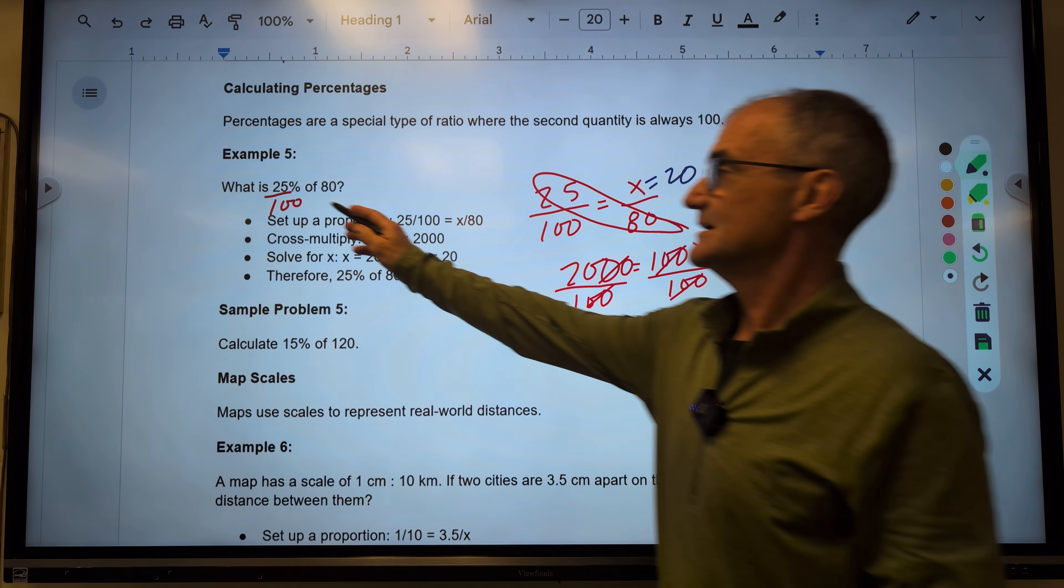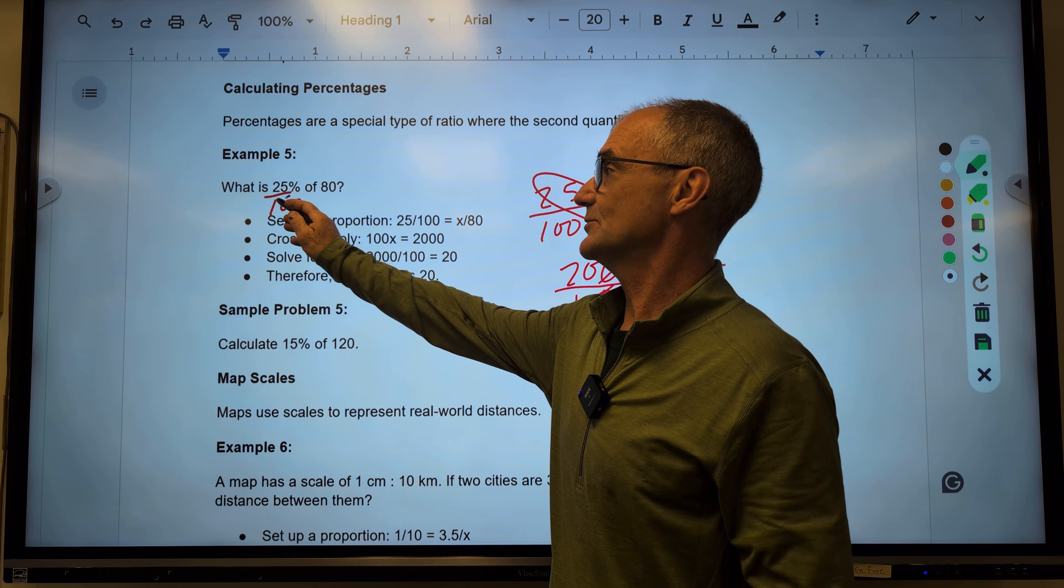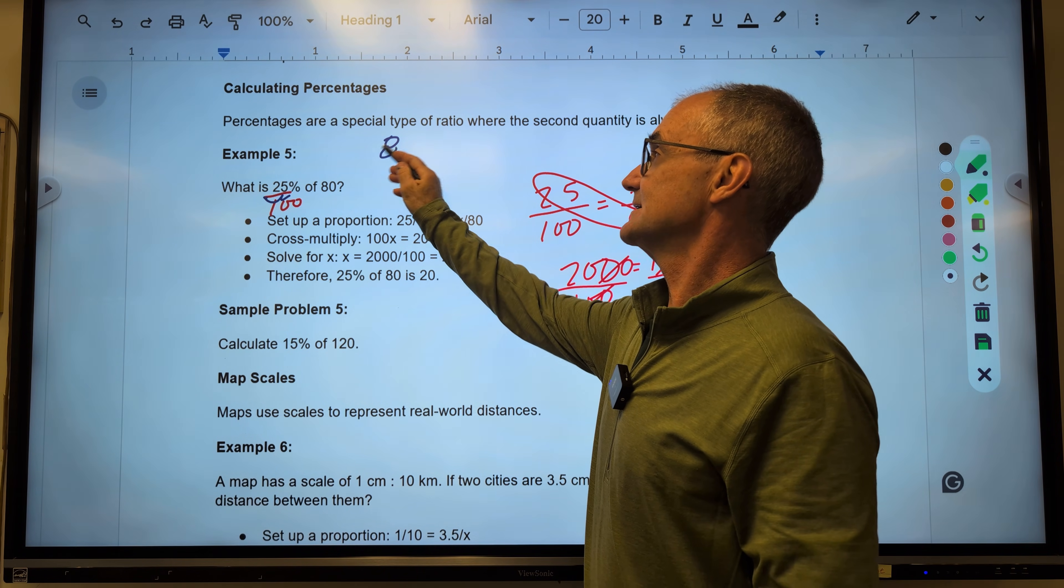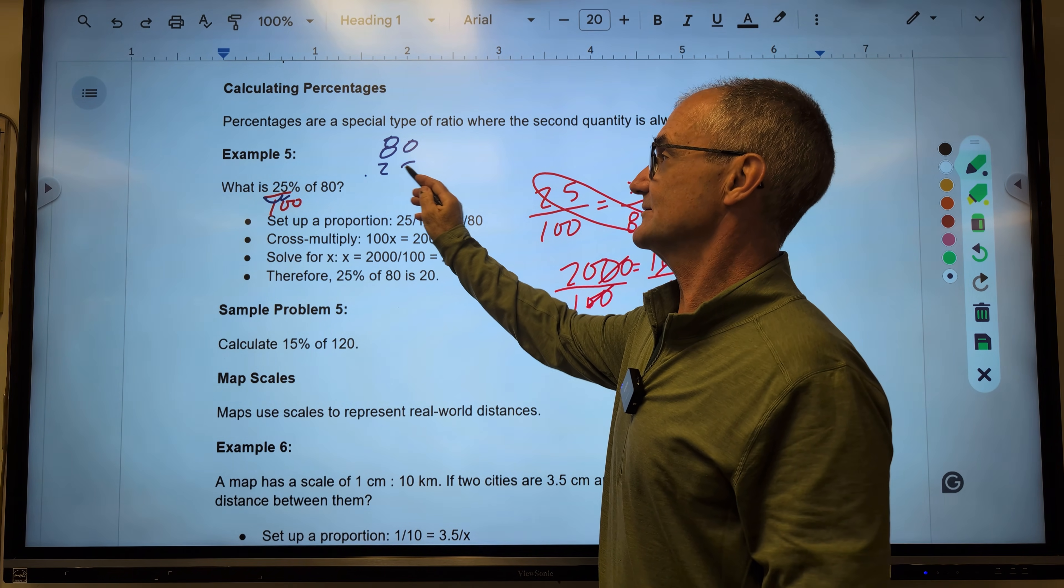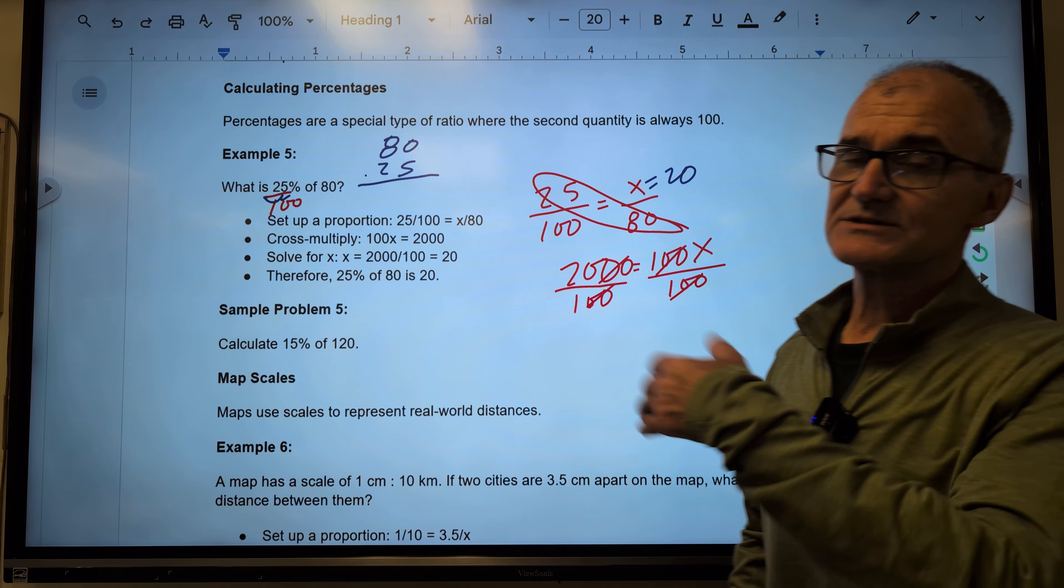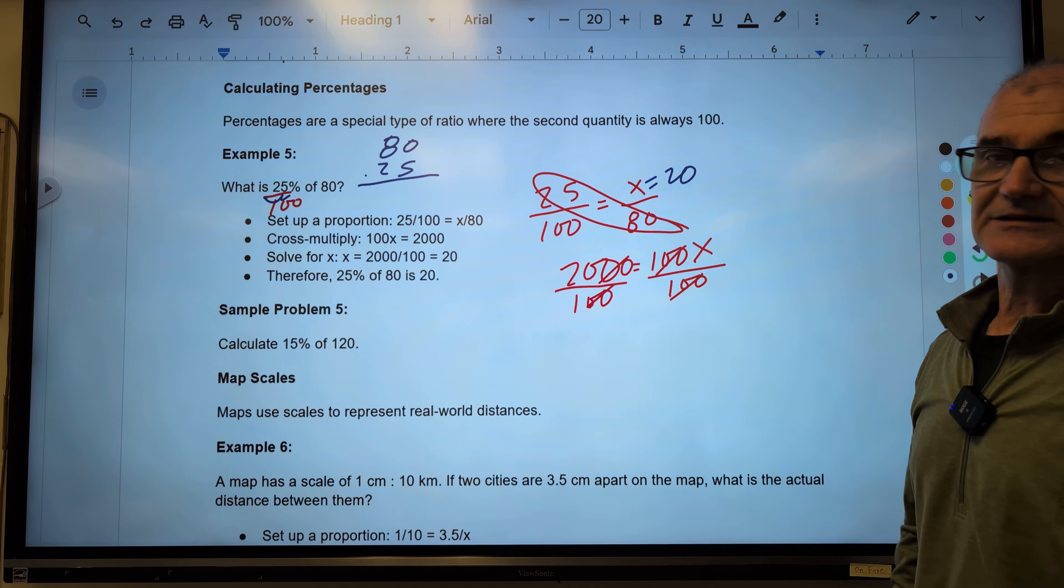The other way to do this is just convert that to a decimal, 0.25, and then do 80 times 0.25. It'll get you to the same place. One's not better than the other. They're kind of equal.